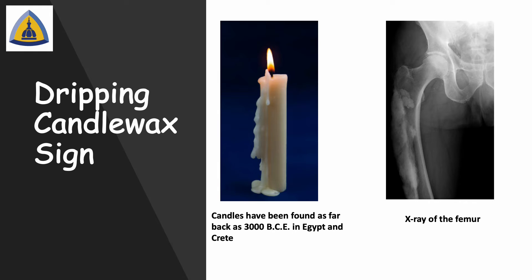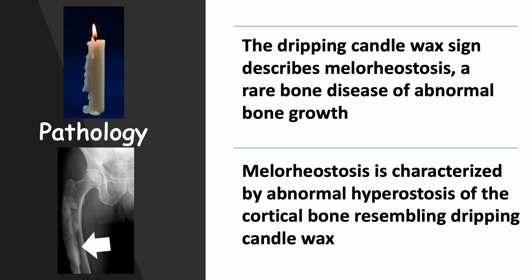Did you know that candles have been found as far back as 3000 BCE in Egypt and Crete? The dripping candle wax sign describes melorheostosis, a rare bone disease of abnormal bone growth. Melorheostosis is characterized by abnormal hyperostosis of the cortical bone, which resembles dripping candle wax.